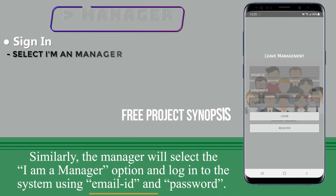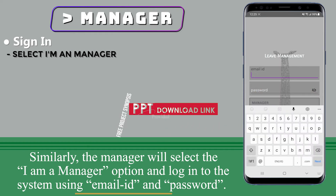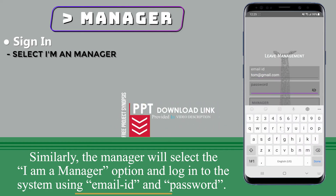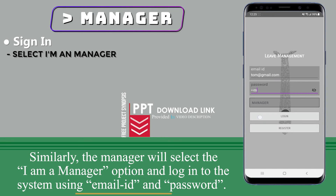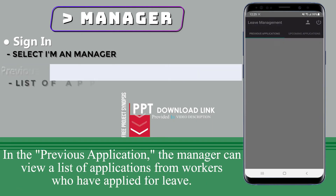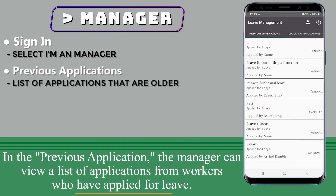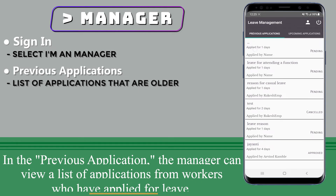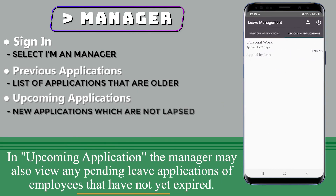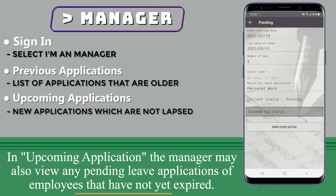Similarly, the manager will select the 'I am a manager' option and log into the system using email ID and password. In the previous application section, the manager can view a list of applications from workers who have applied for leave. In the upcoming application section, the manager may also view any pending leave applications of employees that have not yet expired.